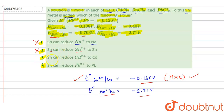In option C, it is given that tin can reduce Cd2+ to Cd. The reduction potential of cadmium is minus 0.40 V, which is again less than that of tin (minus 0.136 V). So this is also wrong — tin cannot reduce Cd2+ to Cd.